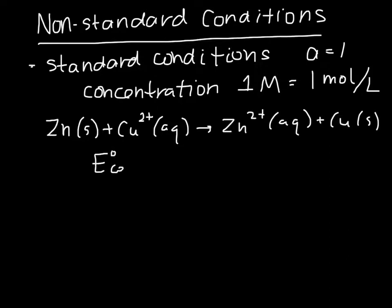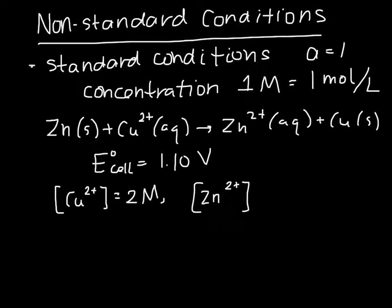The standard cell potential for this cell is 1.10 volts. What happens, though, if the concentration of copper ions is increased in the solution and at the same time the concentration of zinc ions in the other solution is decreased?